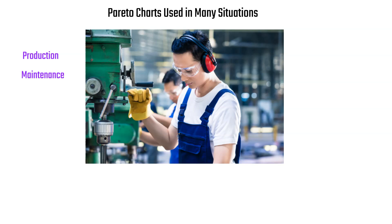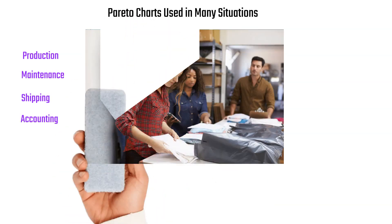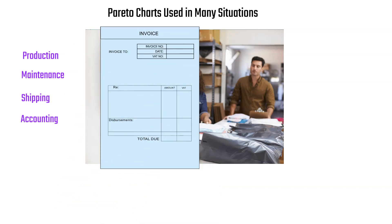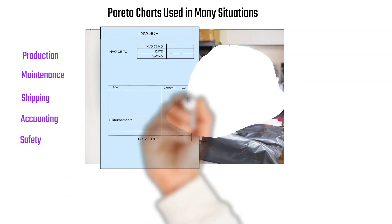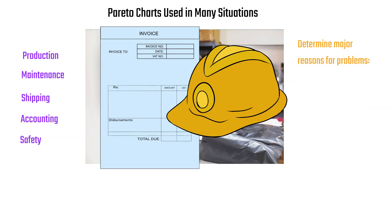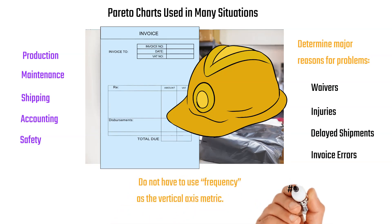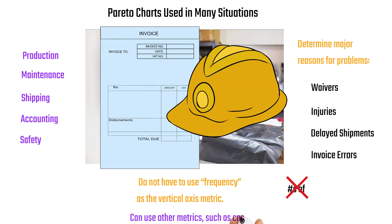Pareto charts are used in many situations: production, maintenance for downtime reasons, shipping errors, accounting, billing errors, and safety. You can determine major reasons for injuries, delayed shipments, and invoice errors. Also, you don't have to use frequency on the y-axis — you can use cost, such as the medical costs associated with injuries.